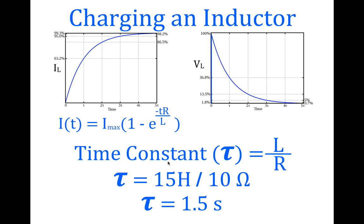This is the equation we use to calculate the current with respect to time, and this is the equation we use to calculate the voltage with respect to time. For current, i(t) equals the maximum current — determined by V divided by R using Ohm's law — times 1 minus e raised to the power of minus T times R divided by L. In the general form this is minus T divided by the time constant. Since tau equals L over R, we simplify to get minus T times R divided by L.